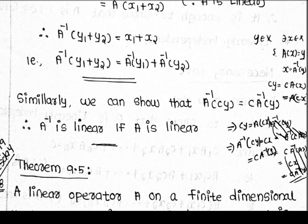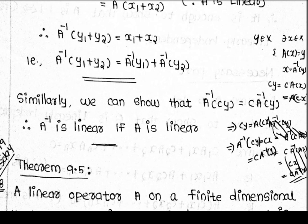For the scalar condition: there exists x in X such that A(x) = y, so x = A⁻¹(y). Then c·y = c·A(x). By linearity, c·y = A(c·x), so A⁻¹(c·y) = c·x = c·A⁻¹(y). Therefore A⁻¹ is linear.